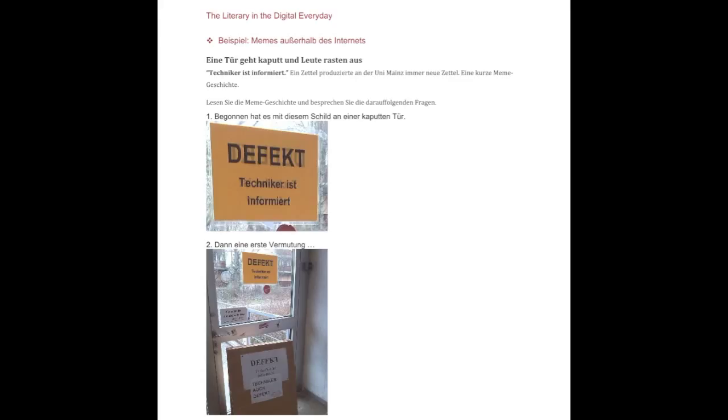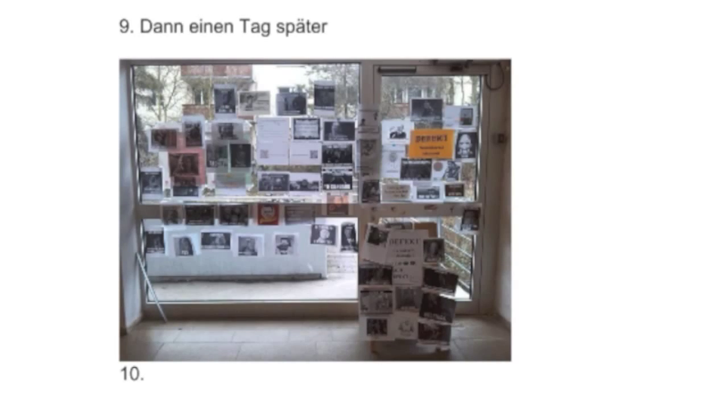Some of you may have seen this — it made it around the internet a lot. It was an event at the University of Mainz where a door broke. What happened was people started to post print-offs of various internet memes around a sign that said 'the repairman has been informed.' And then people started posting internet memes around that post. What intrigued me, in addition to this reference to it being a meme story — already a kind of hybrid digital literary genre — was the ways in which it plays with allusion and citational practices, which I think are a kind of literary practice.